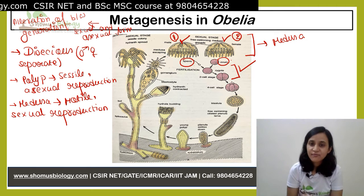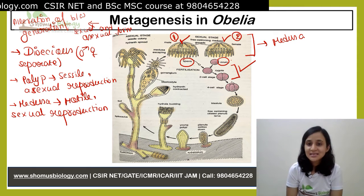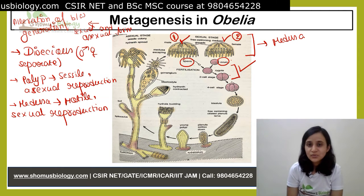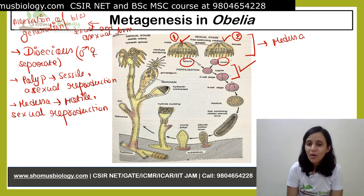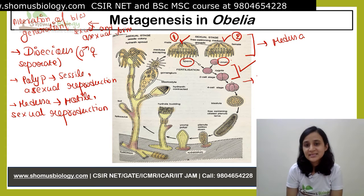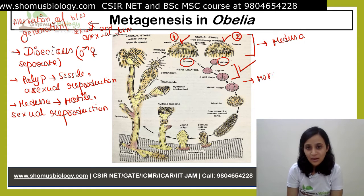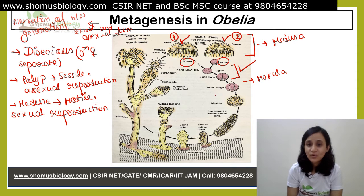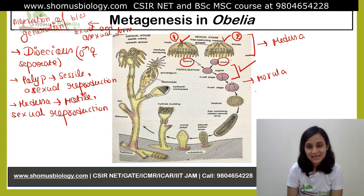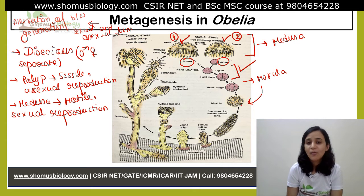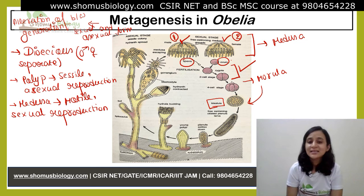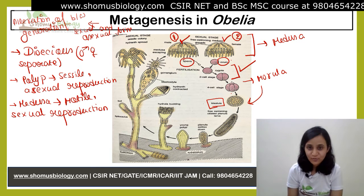The fertilized ovum creates the zygote, and the zygote then undergoes a number of cell divisions. First it forms the morula — a four-cell stage — and the morula undergoes further cell division to form the blastula, where the cell number has been increased.